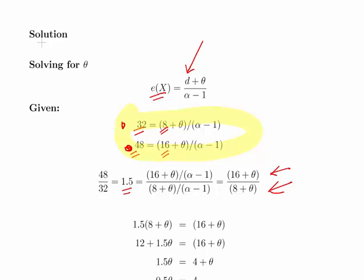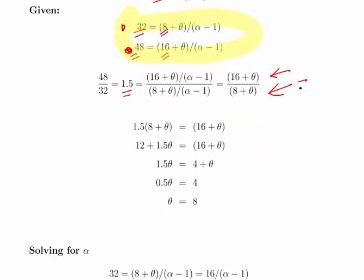I'm just going to cross multiply. 1.5 times 8 plus theta is equal to 16 plus theta. Work it out there: 12 plus 1.5 theta equals 16 plus theta, 1.5 theta equals 4 plus theta, that means 0.5 times theta equals 4 and theta must equal 8.